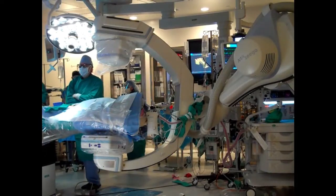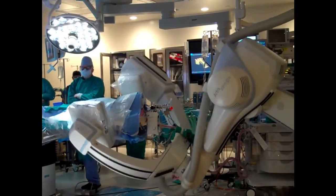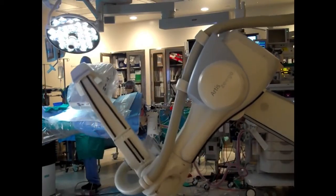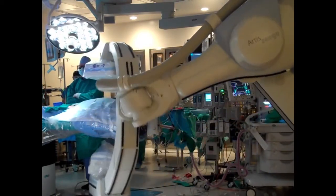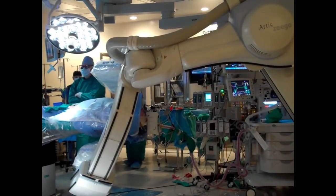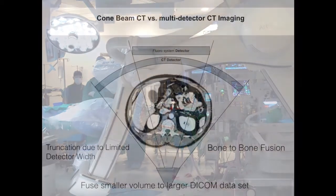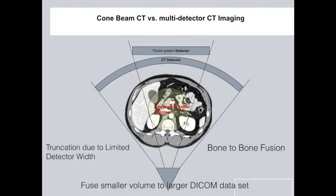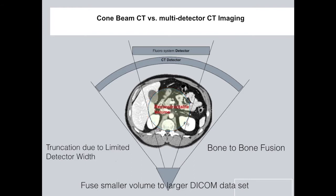The first step is the acquisition of the cone beam CT. Think of the C-arm — in this case the Siemens Siegel — as a large single plate CT detector. This rotation allows us to create a three-dimensional DICOM data set, shown here in this reconstructable volume. Think of this as a truncated data set, which is limited due to the size of the detector.